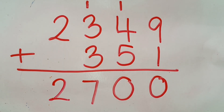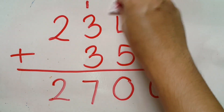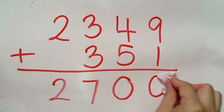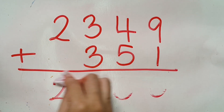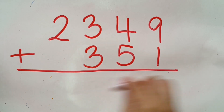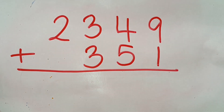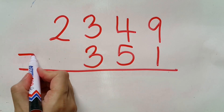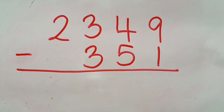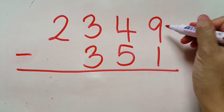Two plus empty will be two — empty is considered nothing, like none. So we get the total of two thousand seven hundred. Moving on to minus: two thousand three hundred forty nine minus three hundred fifty one.